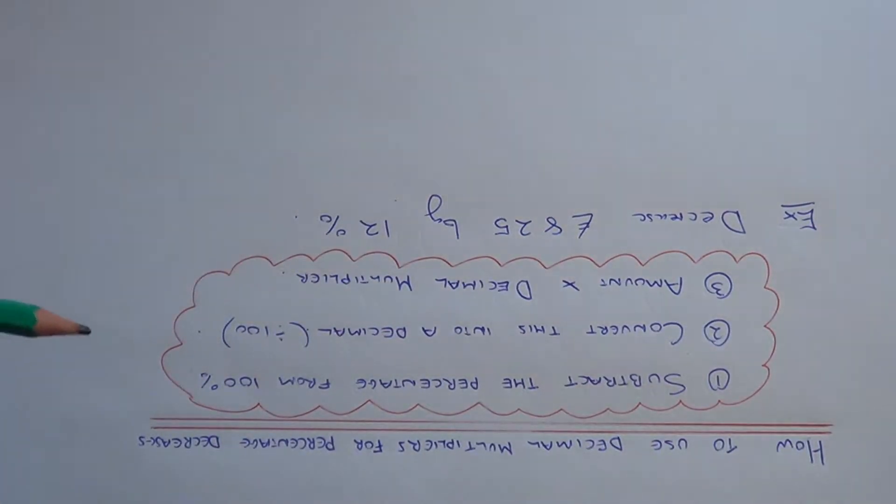Today I want to show you how to decrease an amount by using decimal multipliers. There are three steps which you need to follow.